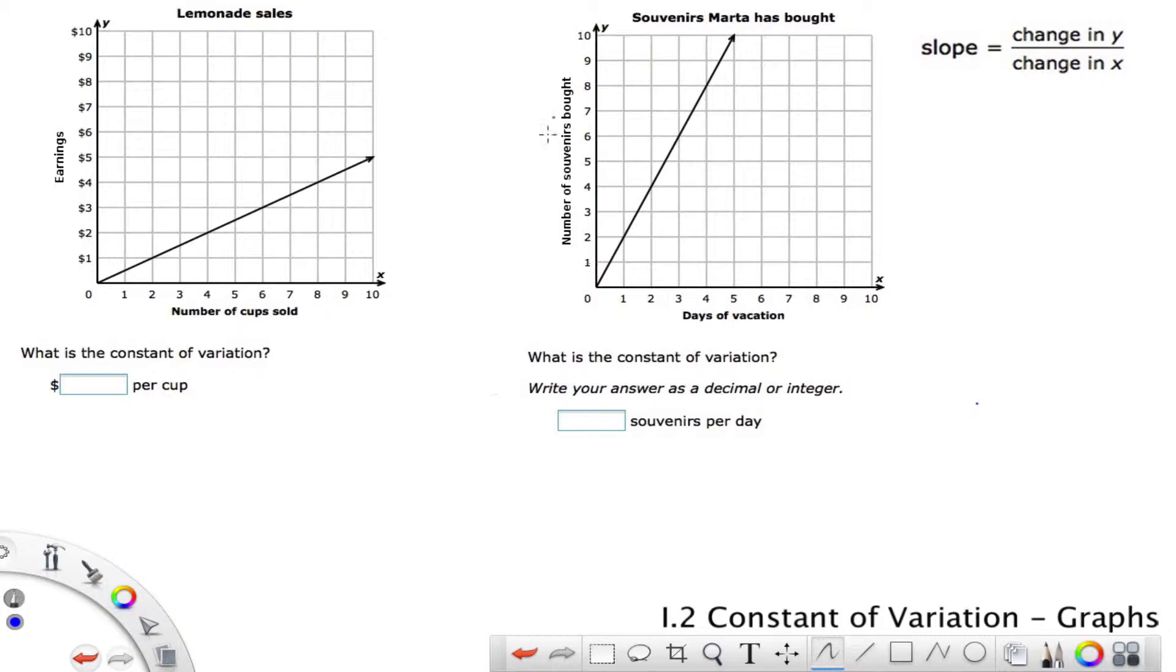So again, this is going to use our formula up here in the upper right. Slope equals change in y over change in x, because the constant of variation, this constant of variation here, that is the same thing as saying, what is the slope of this line?